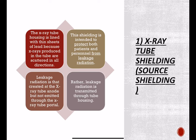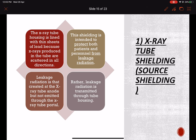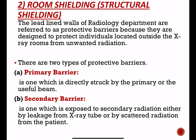Pure lead is brittle and cannot be worn as an apparel, so it is used in the form of lead oxide mixed with plasticizers or binders to prepare protective shielding from which protection apparel are made. The protection provided by this type of shielding is compared with pure lead and is referred to as lead equivalence.